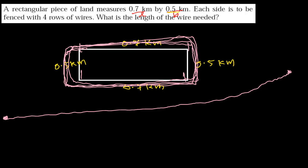So how do we find that? We find the perimeter. Perimeter means the sum of all the sides, the sum of the boundaries. One time if we find the perimeter, that gives you the sum of all sides at once. And if we multiply the perimeter four times, it will give you the length of the wire.